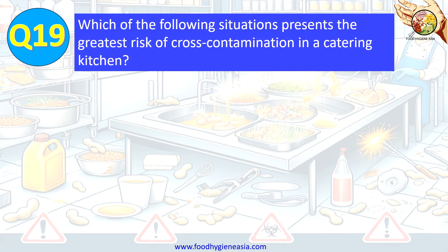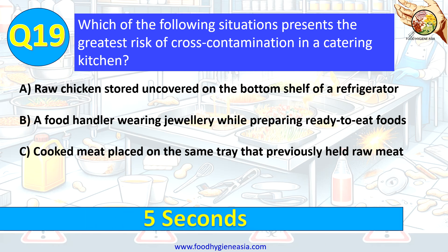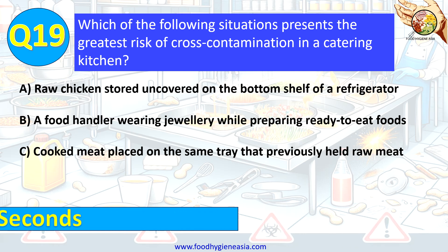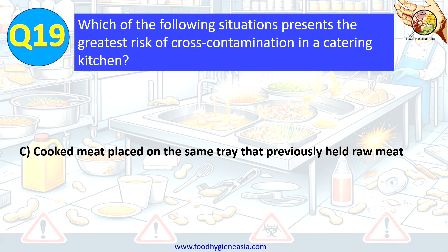Question 19. Which of the following situations presents the greatest risk of cross-contamination in a catering kitchen? A. Raw chicken stored uncovered on the bottom shelf of a refrigerator. B. A food handler wearing jewelry while preparing ready-to-eat foods. C. Cooked meat placed on the same tray that previously held raw meat. The correct answer is C. Cooked meat placed on the same tray that previously held raw meat.